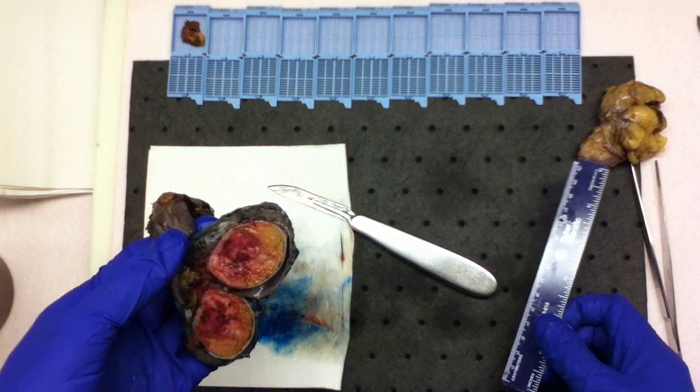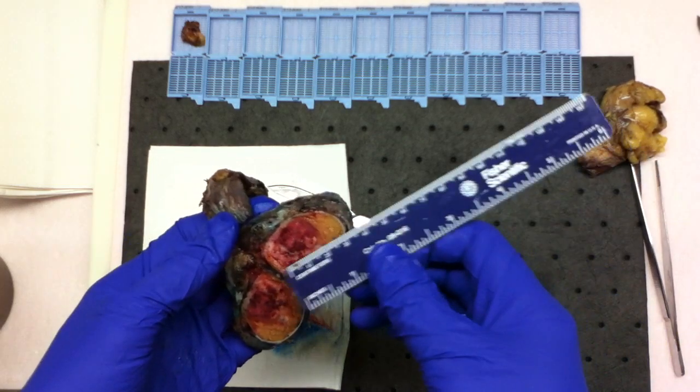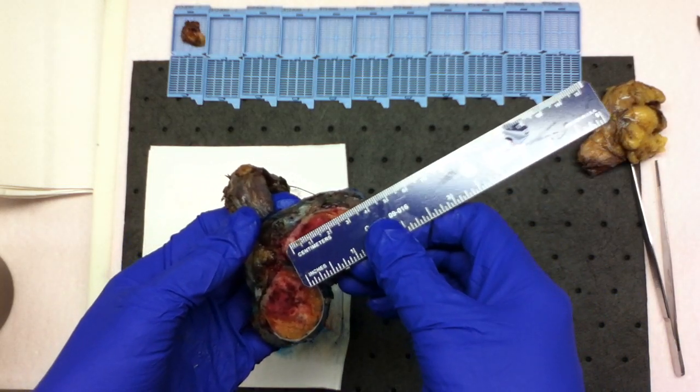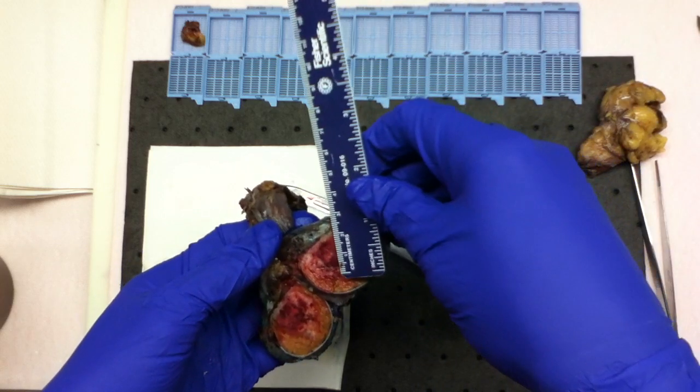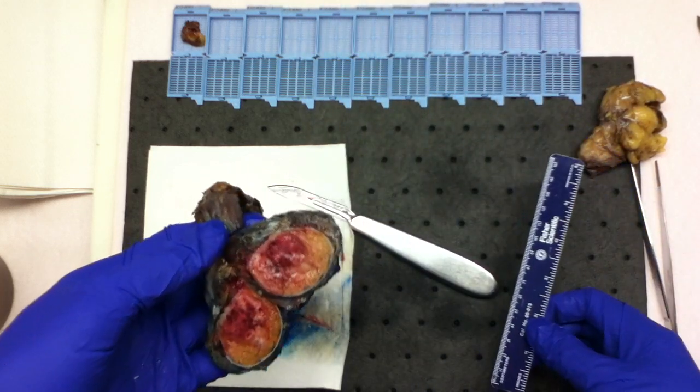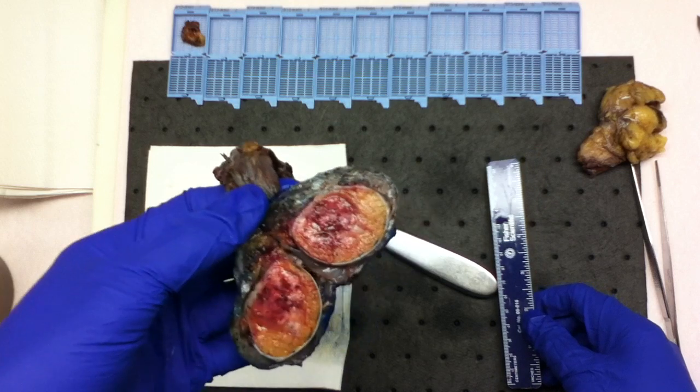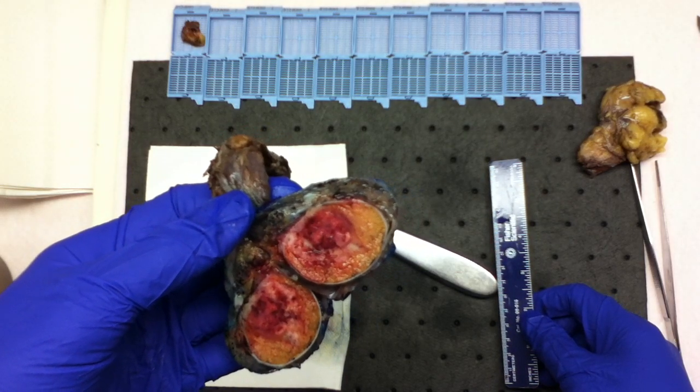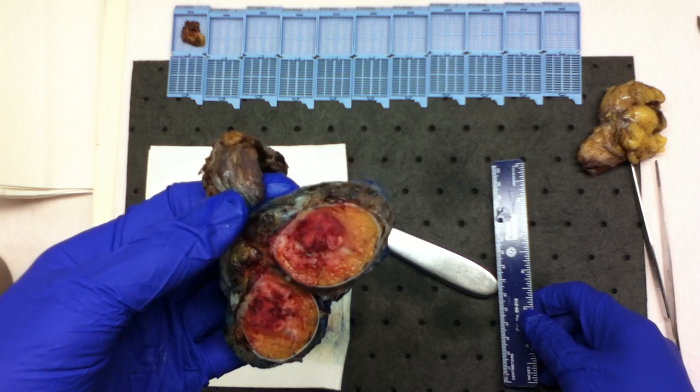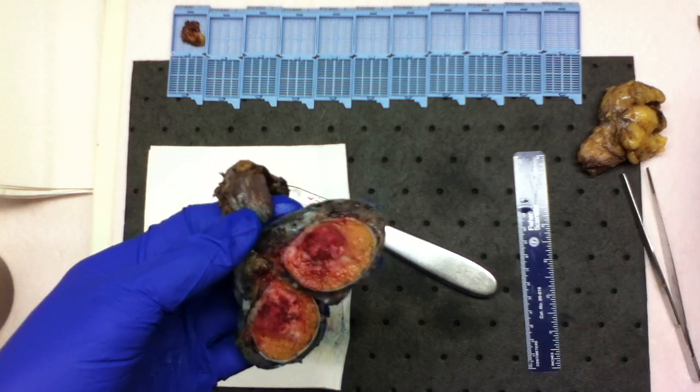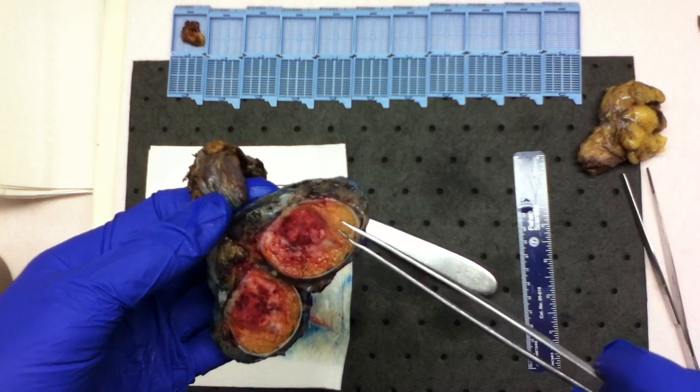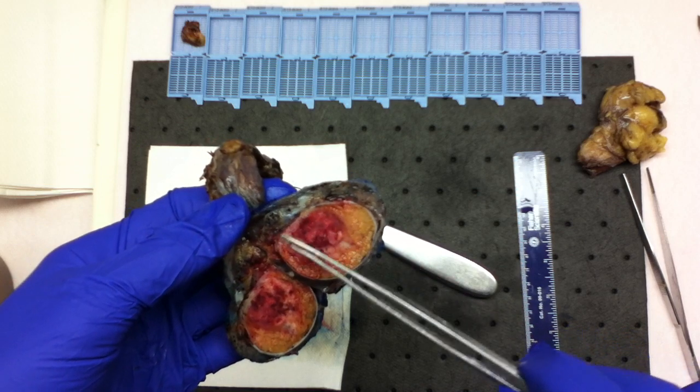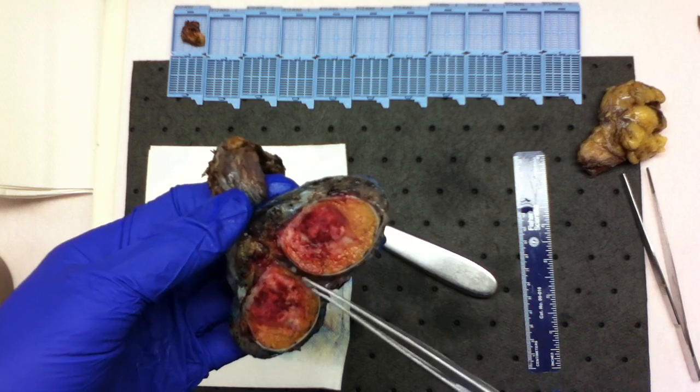The sectioning reveals a 2.4 by 2.0 by 2.0 cm tan red to yellow to white, variegated, poorly demarcated mass within the testicular parenchyma, confined to the underlying tunica albuginea.